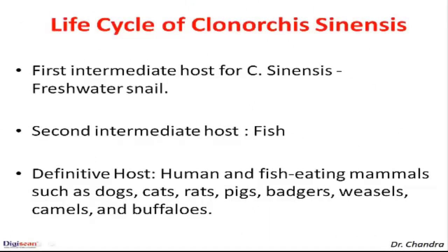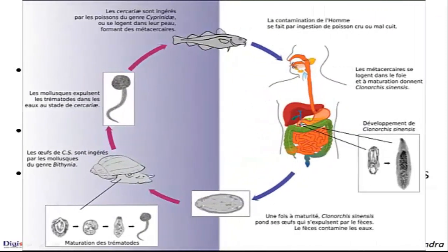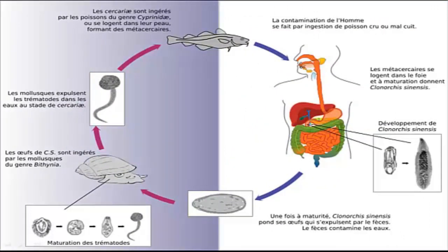If we go through the life cycle of Clonorchis sinensis, the first intermediate host is the freshwater snail. The second intermediate host is fish, and the definitive host is humans and fish-eating mammals such as dogs, cats, rats, pigs, badgers, weasels, camels, and buffaloes.